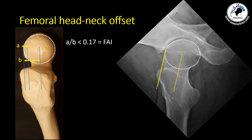Another measurement is the head and neck offset ratio — the ratio between the neck offset and the head offset at the most prominent area. Usually this head and neck offset should be more than 17%, meaning you should have an offset of almost one fifth of the radius of the head for a clear head and neck offset. In this example, you can see that the head and neck offset ratio is almost zero.